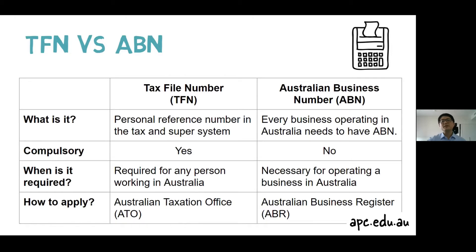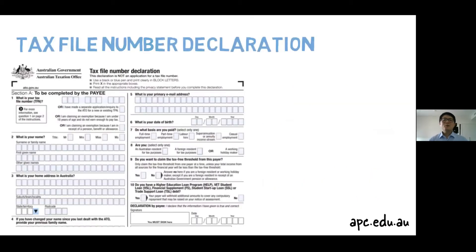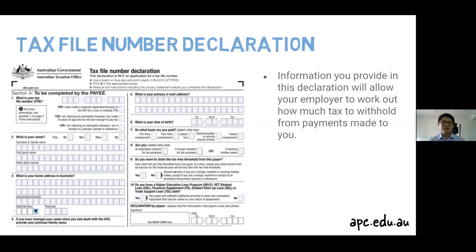Both the Tax File Number and the Australian Business Number will be very important if you are in Australia, so please keep them in a safe place. When you start a job in Australia, your employer will normally ask you to fill in a Tax File Number Declaration form. You will provide your personal information including your TFN to your employer, and they will use this information to work out how much tax to take from your payment and pay to the ATO on your behalf.